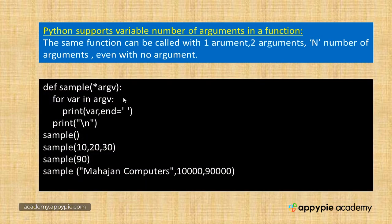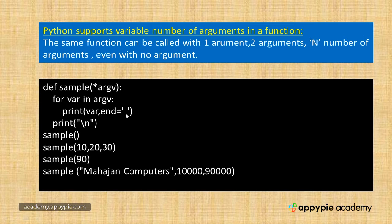Let me show you a sample program. Here I have a function called 'sample', and in it I have written *args. Remember, this is the syntax — the args name could be anything, but it should be preceded with a star symbol. Then: for var in args: print(var, end=' ').